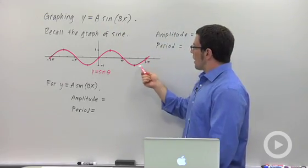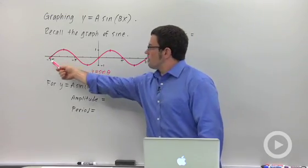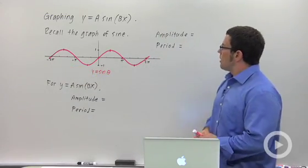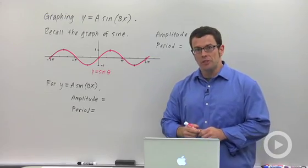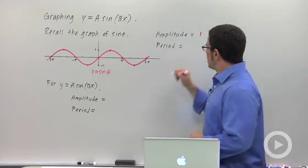Let's begin by reviewing the graph of sine. I've got it drawn here over the interval from negative 2π to 2π. Remember that sine has an amplitude of 1 and a period of 2π.